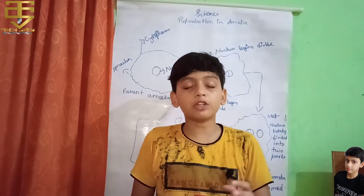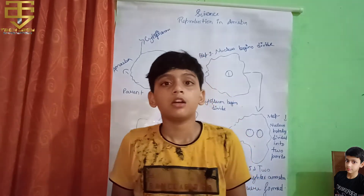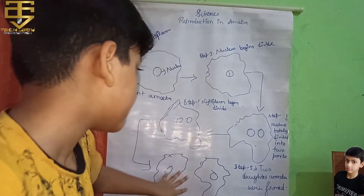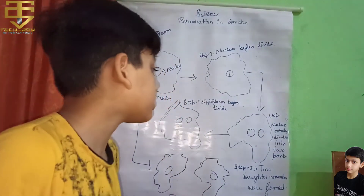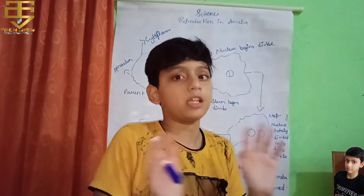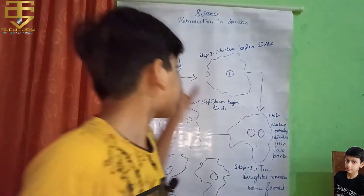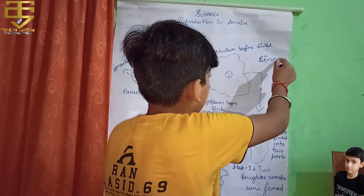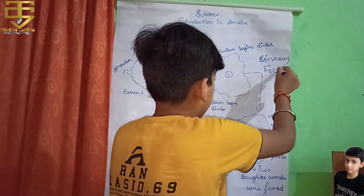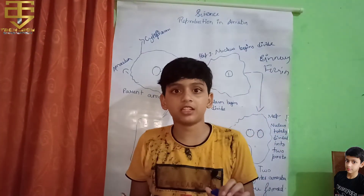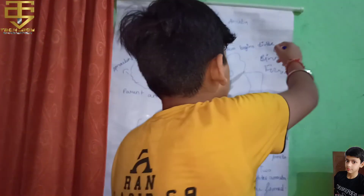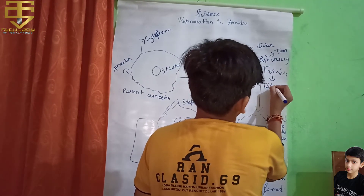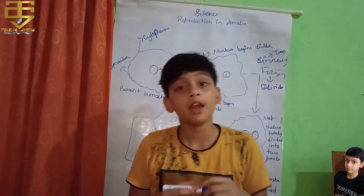The cytoplasm totally divides and makes two daughter amoebas. The entire cytoplasm has divided into two parts — two amoebas are formed. These are called daughter amoebas. This process is called Binary Fission. Binary means two, and Fission means divide.